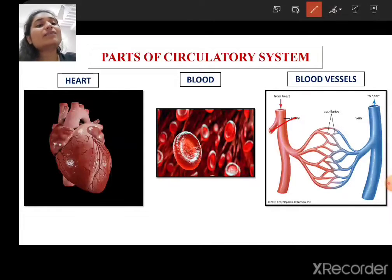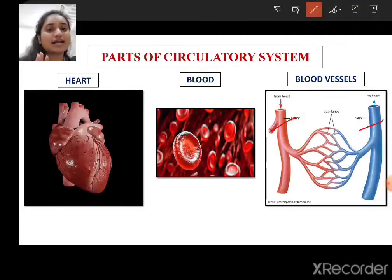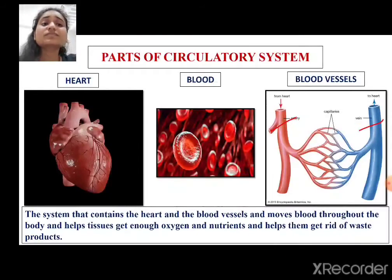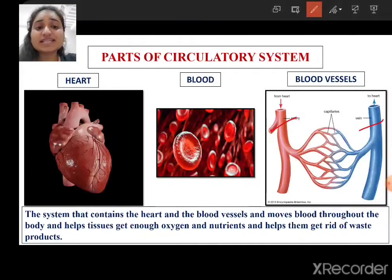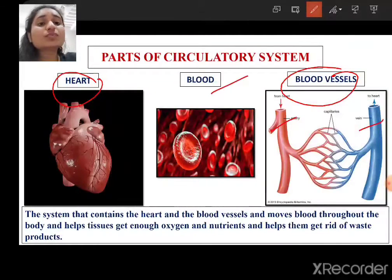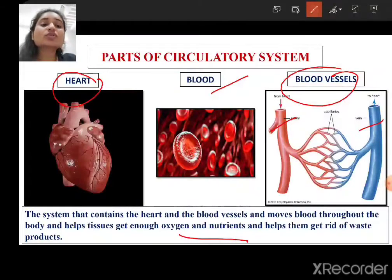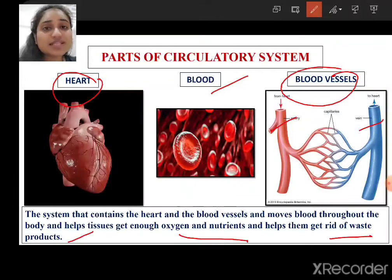You need to know that an artery carries oxygenated blood from the heart to the body, and a vein carries deoxygenated blood from the body to the heart. To define the circulatory system: it is the system that contains the heart and blood vessels, which help to move blood throughout the body and help the tissues and cells get enough oxygen and nutrients, and also get rid of waste products.